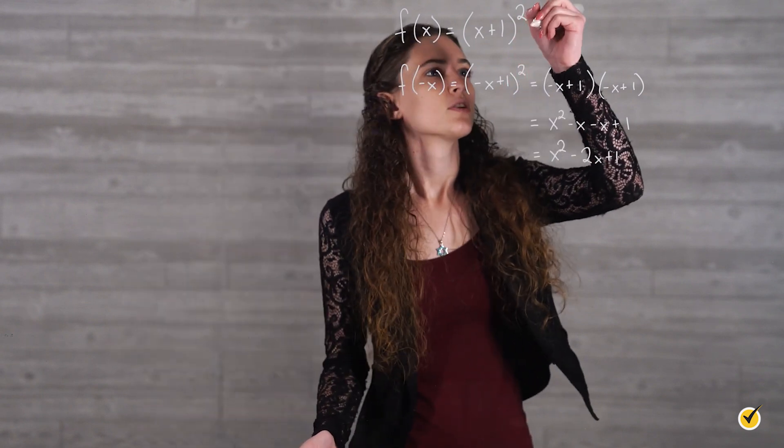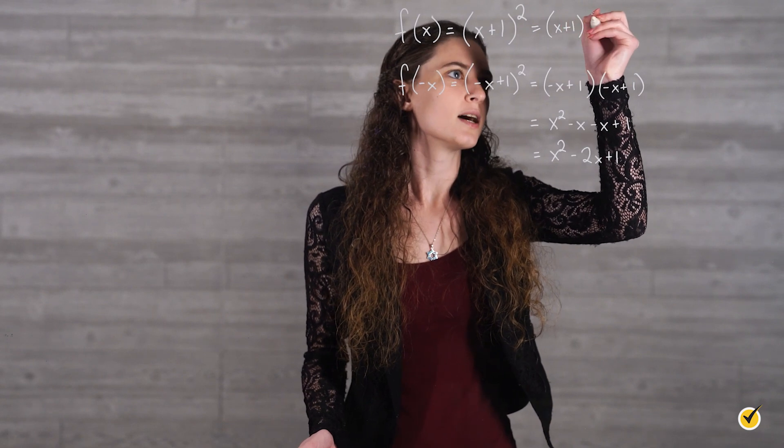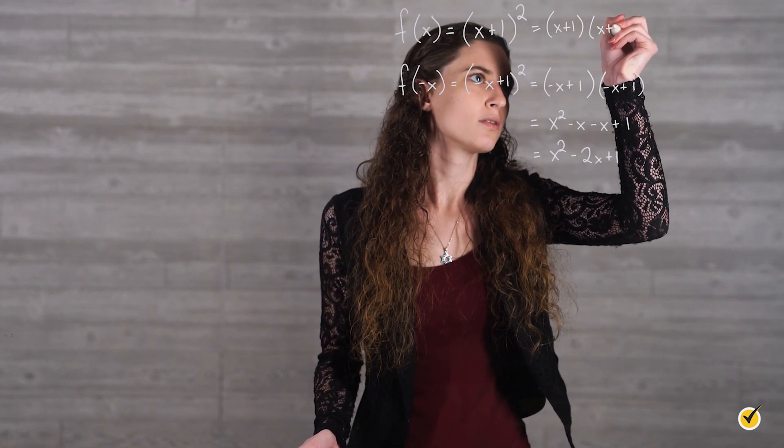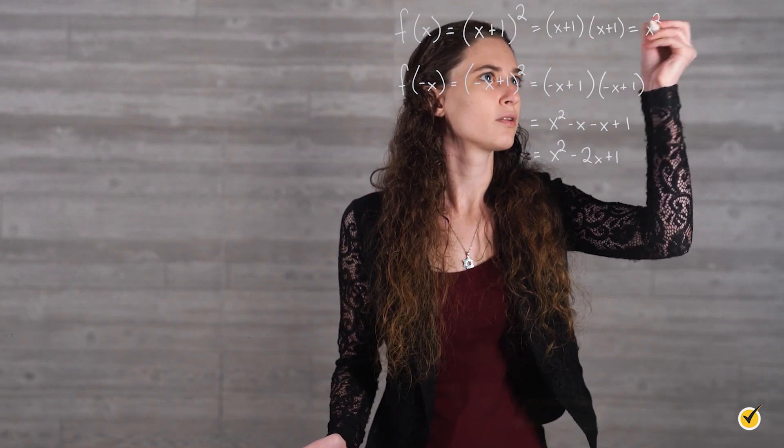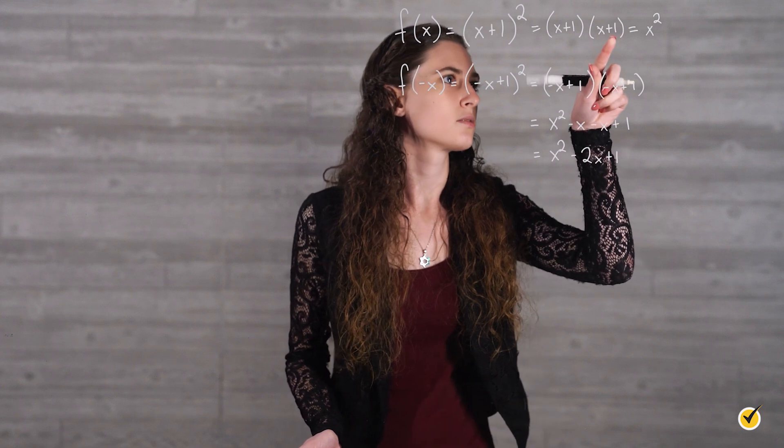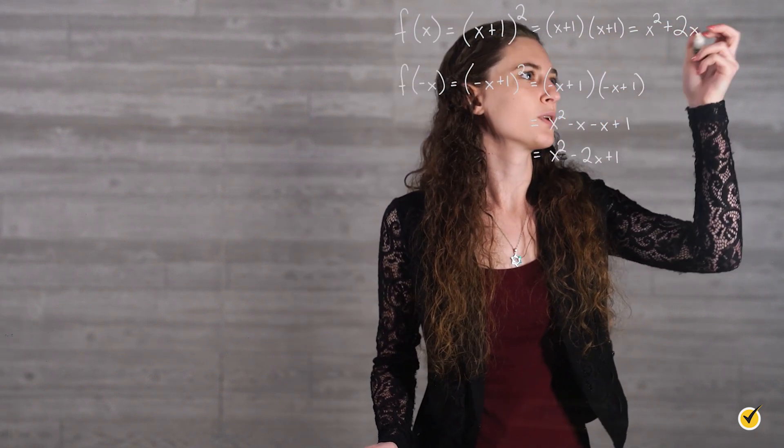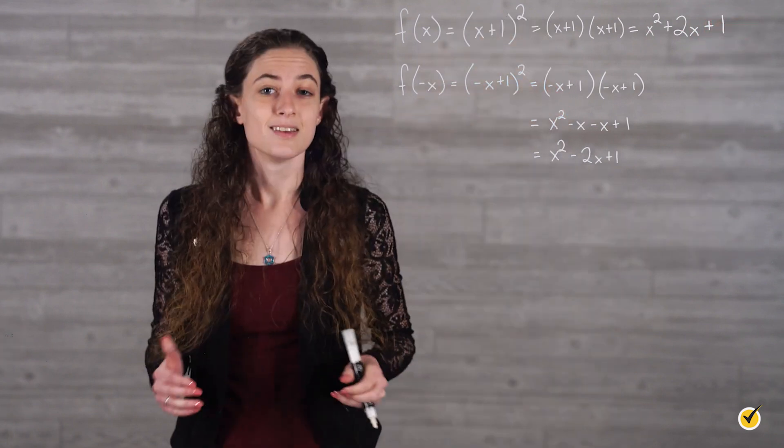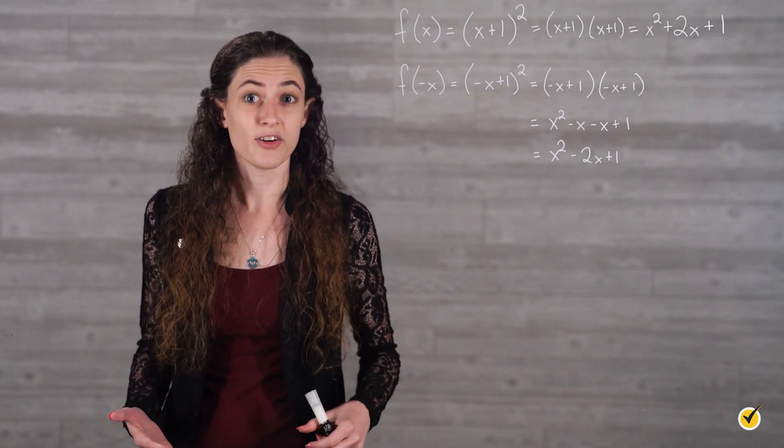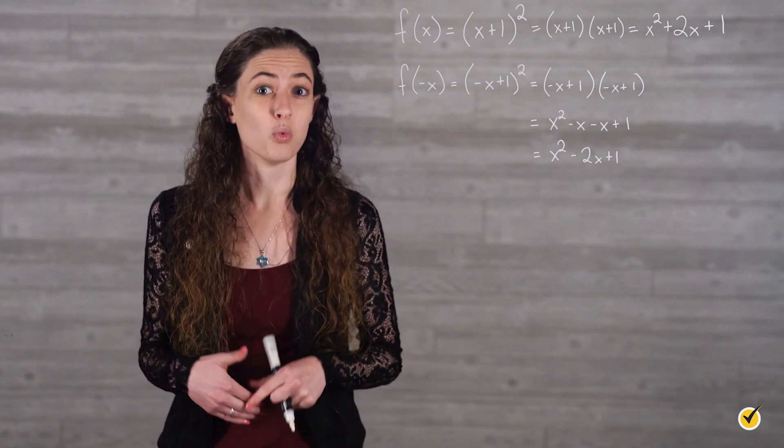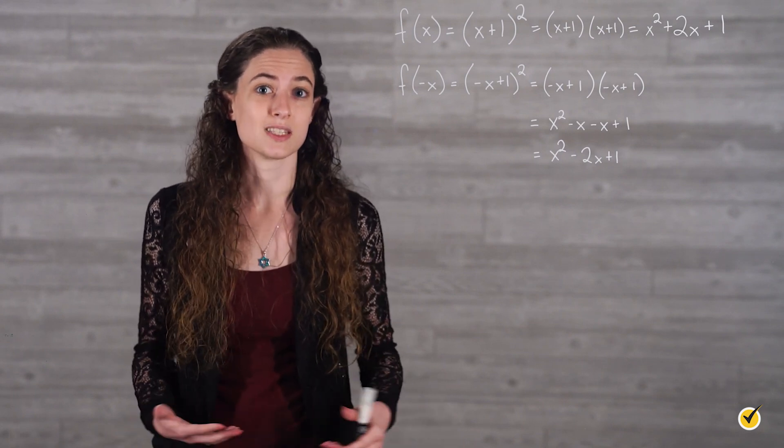So for this, we have (x + 1) times (x + 1), which gives us x squared plus 2x plus 1. Now, when we compare these two functions, we see that only one of the three terms ended up changing signs. So f(-x) is not odd. And since one term did change signs, f(-x) does not equal f(x), so the function is not even either.